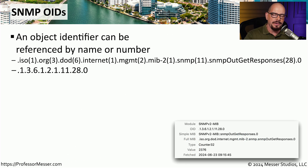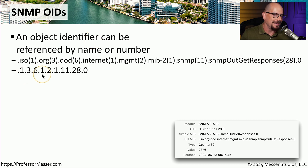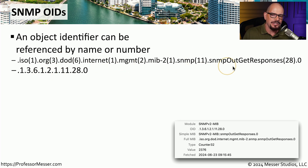When performing a query to a device using SNMP, we need to refer to a specific variable we would like to pull back to our management station. That individual variable is called an object identifier, or OID. The object identifier is a series of numbers — for example, 1.3.6.1.2.1.11.28.0. Each number is associated with a particular set of values: 1 is ISO, 3 is ORG, 6 is DOD, 1 is internet, 2 is management, and so on.